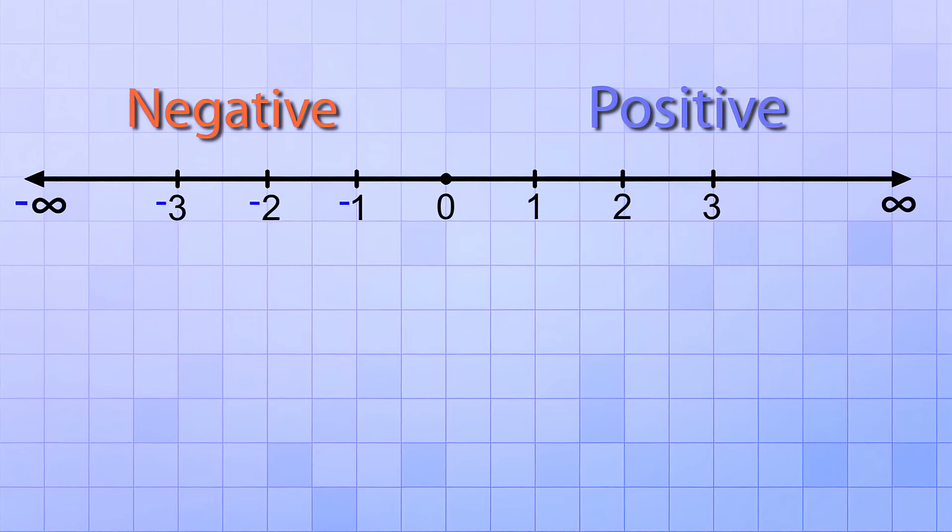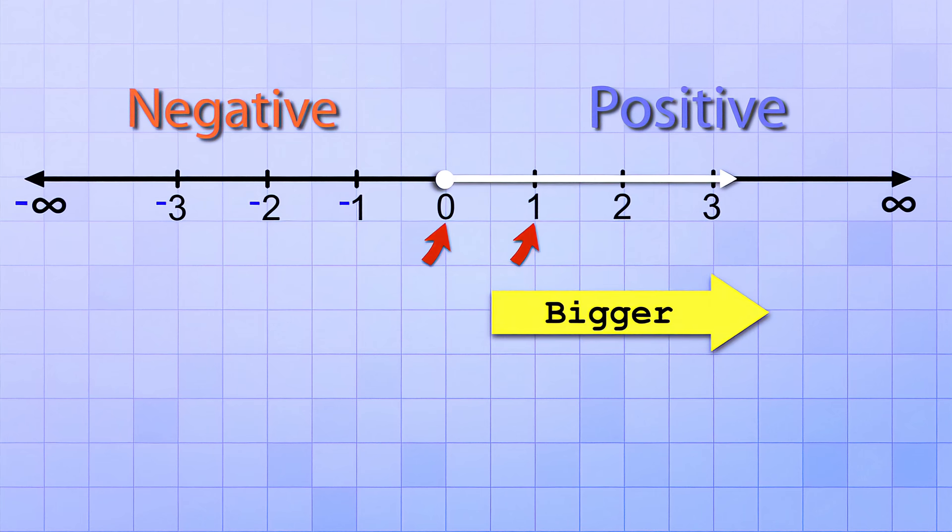Have you noticed that if you start at 0 on the number line, and then you move to the right, the numbers keep getting bigger and bigger as you go along? 1 is greater than 0, 2 is greater than 1, and 3 is greater than 2, and so on.